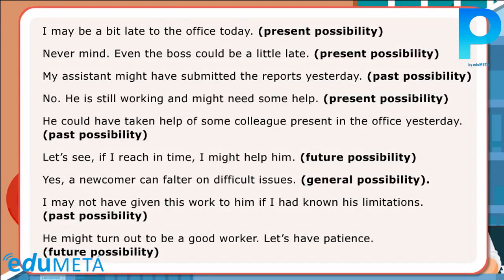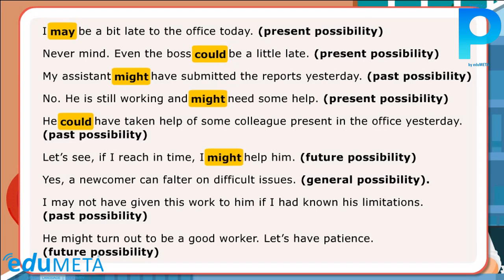Examples: I may be a bit late to the office today — present possibility. Even the boss could be a little late — present possibility. My assistant might have submitted the reports yesterday — past possibility. He is still working and might need some help — present possibility. He could have taken help of some colleague present in the office yesterday — past possibility. Let's see if I reach in time — I might help him — future possibility. A newcomer can falter on difficult issues — general possibility. I may not have given this work to him if I had known his limitations — past possibility. He might turn out to be a good worker — future possibility.